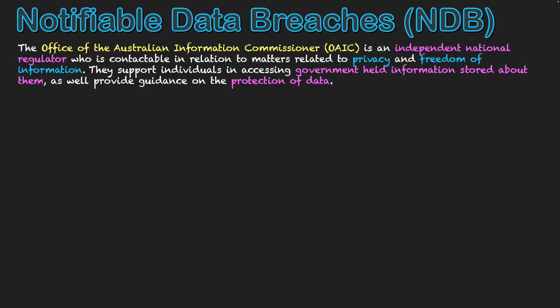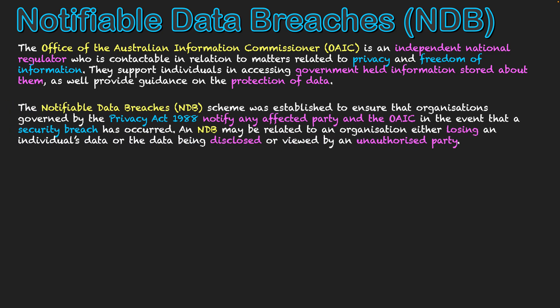We're talking about them because we're really talking about notifiable data breaches. An NDB, or the Notifiable Data Breach Scheme, was established to ensure that organizations governed by the Privacy Act of 1988 notify any affected party, as well as the OAIC, in the event that there's been a security breach in relation to data.